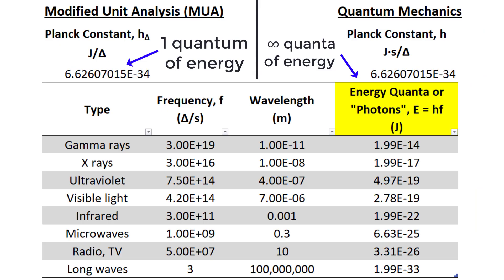To reiterate, in modified unit analysis, all light is made up of one quantum of energy and whose value is 6.26 times 10 to the power of negative 34 joules per cycle. In quantum mechanics, there are an infinite number of quanta of energy obtained by multiplying an infinite range of frequencies by the quantum of action 6.26 times 10 to the negative 34 joules times second per cycle.